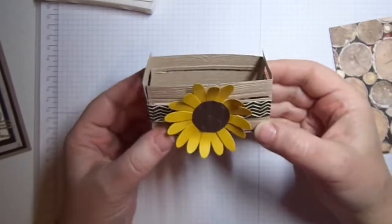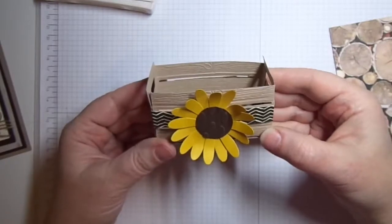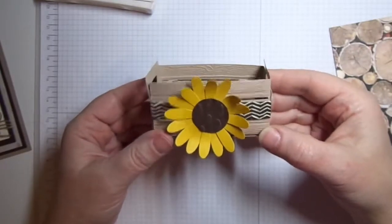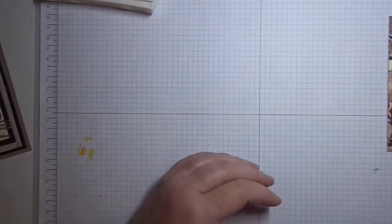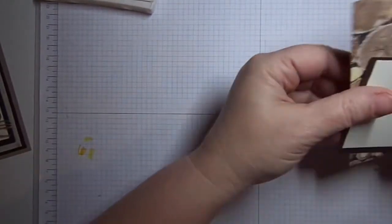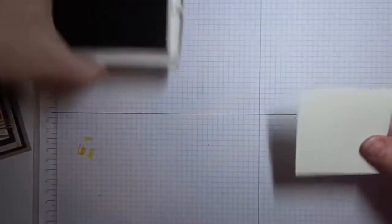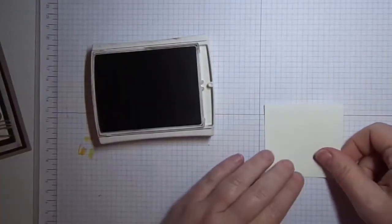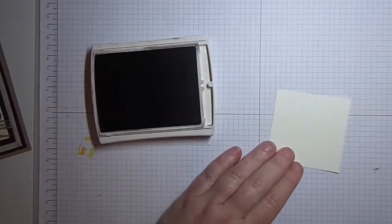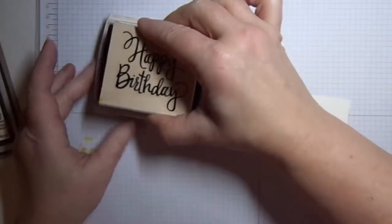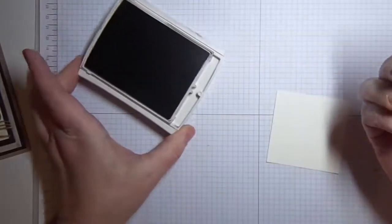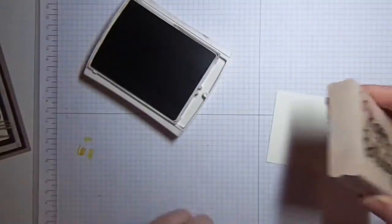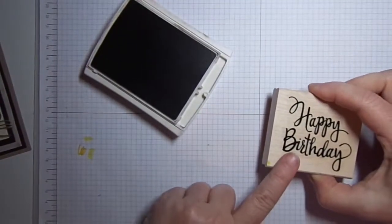Okay, so back to our card. We have our piece of very vanilla which, like I said, was two and three quarters by two and three quarters. I'm just going to take the birthday stamp, ink it up on our early espresso ink, and put it right down on the square.